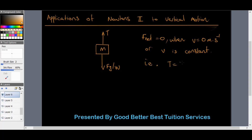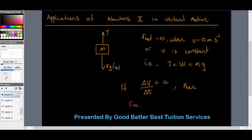But if the lift is accelerating — in other words there is a change in velocity, which equals acceleration per unit time — then F_net is going to equal mass times acceleration.